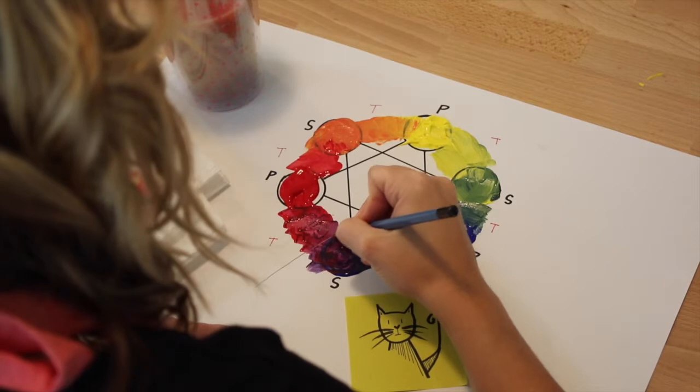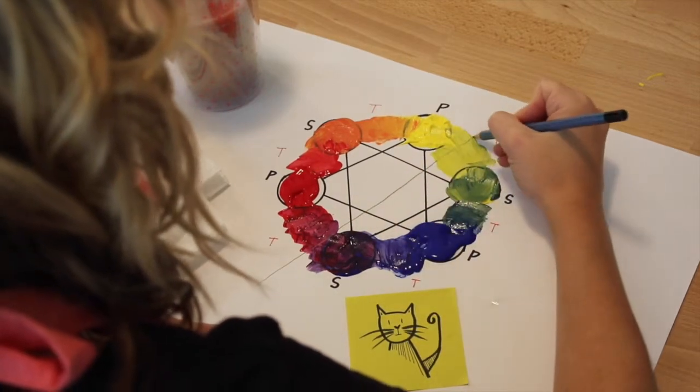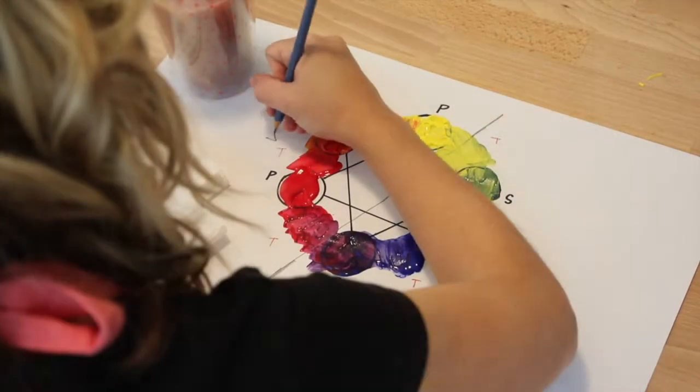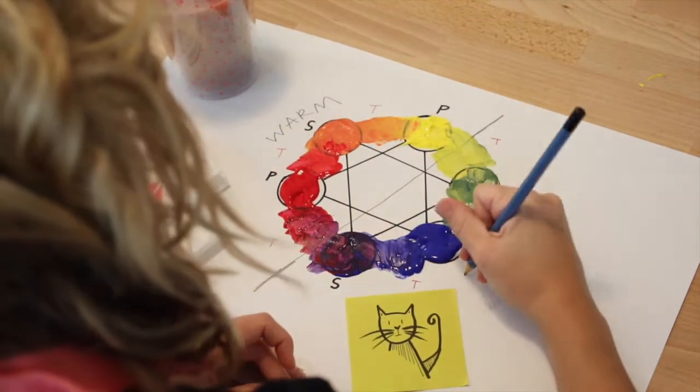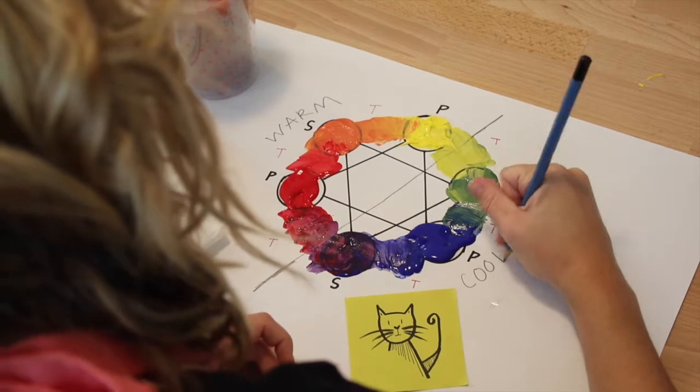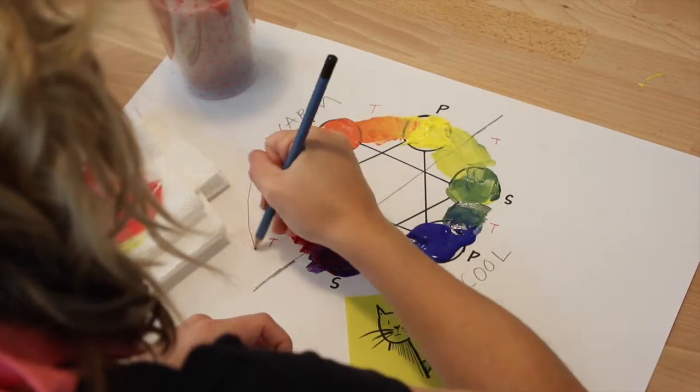Next, I will draw a line to split my color wheel in half. My colors on this side are considered my warm colors, and my colors on the other side of the color wheel are considered cool.